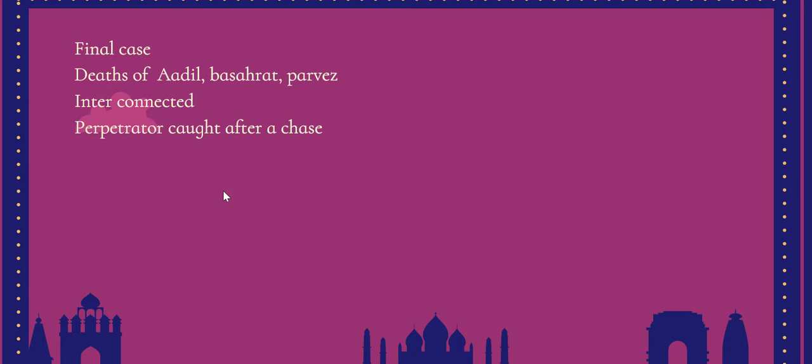Finally, we reach the main case — the deaths of Adil, Basharat, and Parvez. I would not give away the entire suspense, but these murders are connected and happen because the killers, like Faraz, were motivated by personal pain and revenge. It is a woman who is behind these killings, and we are given exciting backstories about her as well. The novel ends on an exciting plot point where everything comes together, there is a chase, and the perpetrators are caught while on the run — incorporating elements of adventure very successfully.